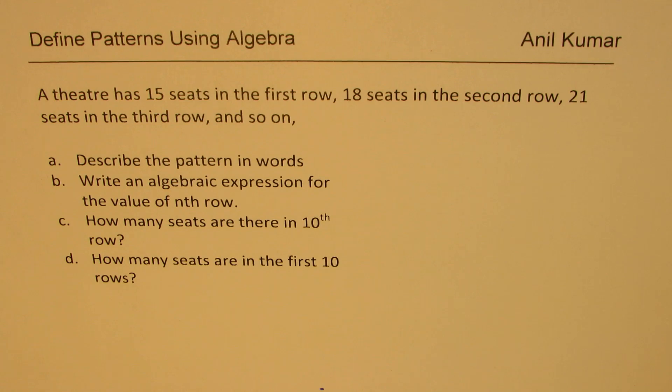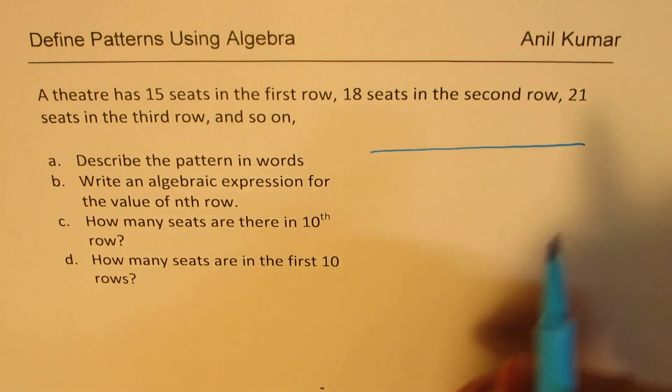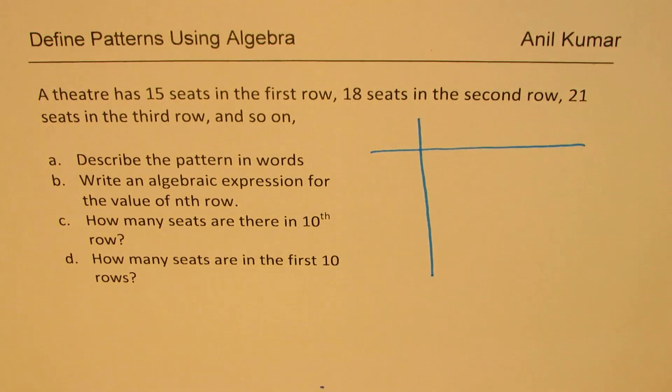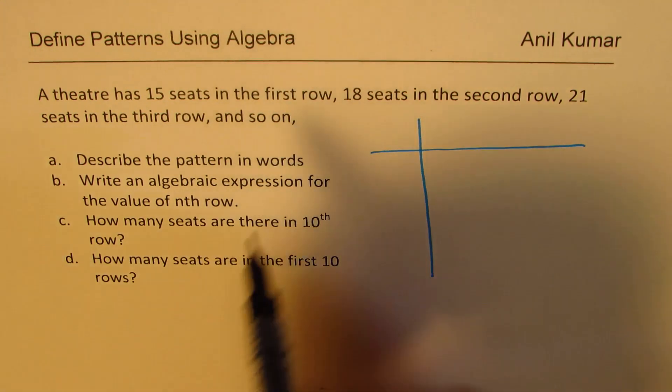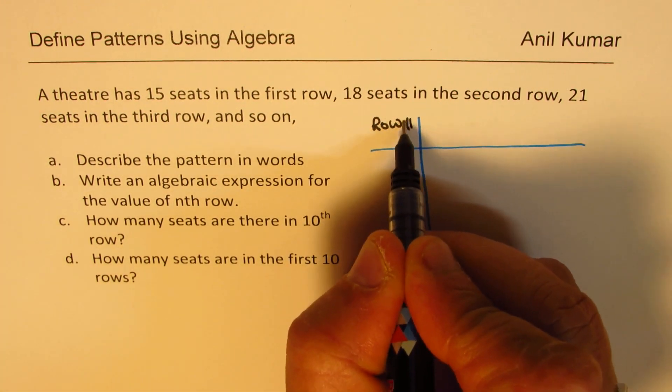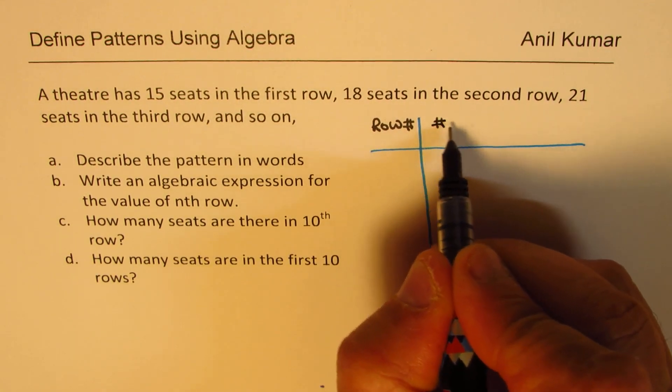Now, whenever you get a question like this, it's a good idea to make a table of values. So we also call it a T-chart for some time. So we're looking for number of seats in each row. Let's say we have the first column, which will describe the row number. And then we have number of seats.